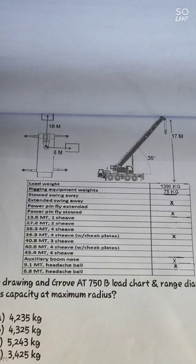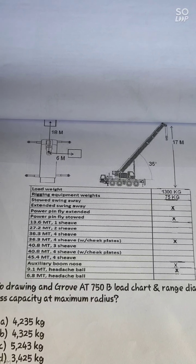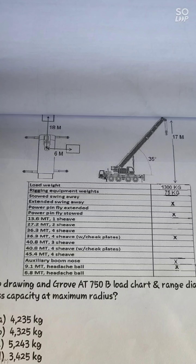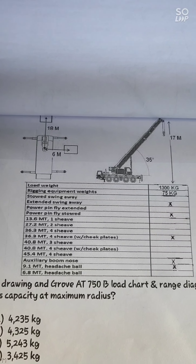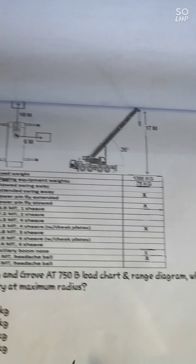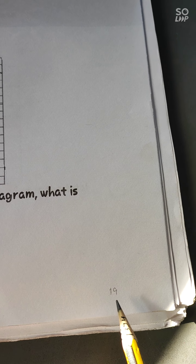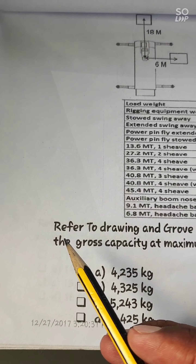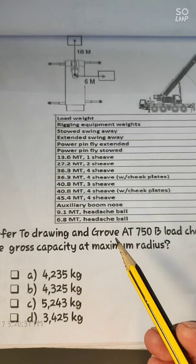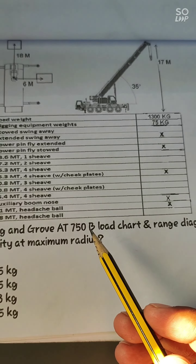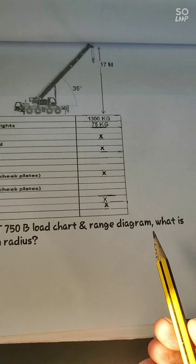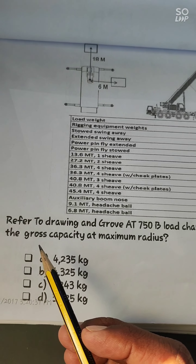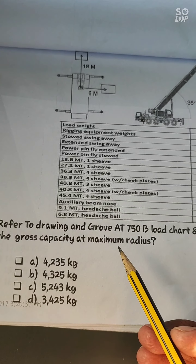If you are new to my channel, please subscribe and hit the notification bell so you don't miss any videos. Now, question number 19: Referring to the Grove 8750B load chart and range diagram — what is the Gross Capacity at Maximum Radius?